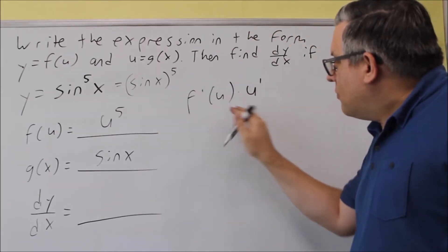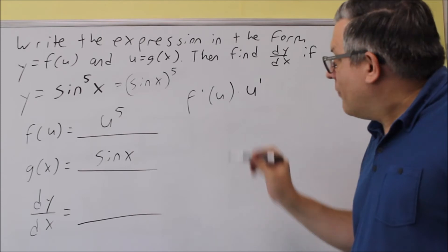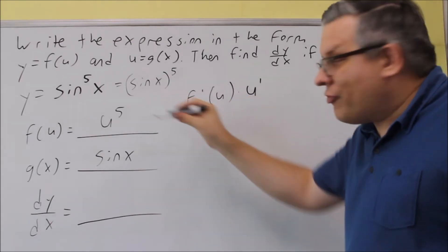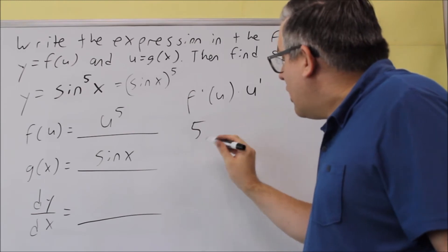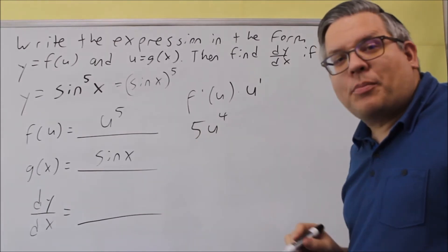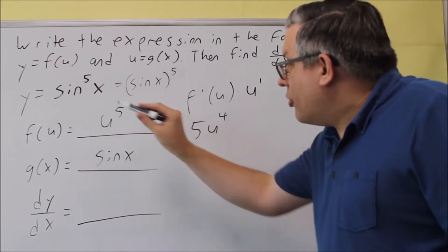We're going to do our formula for the chain rule. We do the derivative of the outside. So we're going to do the derivative of U first. The 5 comes down. We subtract one from the power. We get 5U to the fourth. That's just applying the power rule to our U.